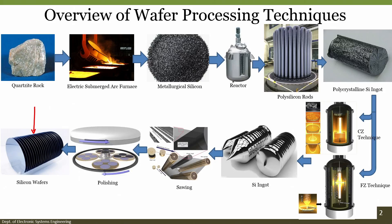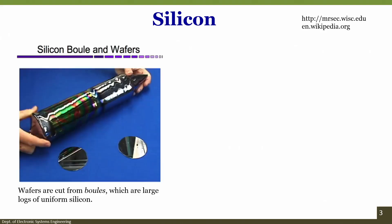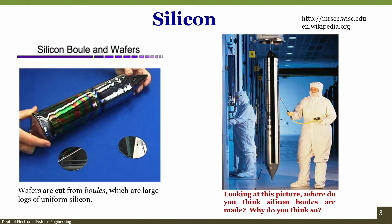Depending on the size or diameter, the wafer can be of 2 inch, 4 inch, 6 inch, 12 inch, 18 inch and so on. Silicon wafers are cut from large logs of uniform silicon — also called silicon ingots.